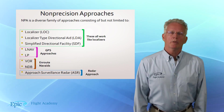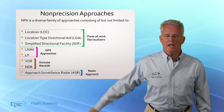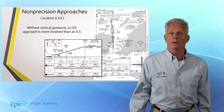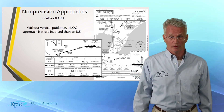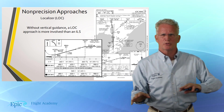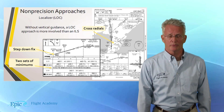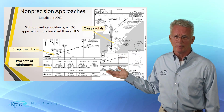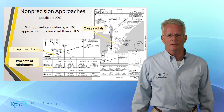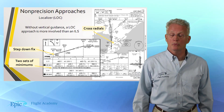Today we'll look at the localizer and the LDA. Looking at the graphic from the online course, we're examining the localizer approach to runway 19 at Cape May County Airport. Without vertical guidance, a localizer approach is more involved than an ILS approach because it requires cross-radials. The cross-radials off of that VORTAC are used to identify specific step-down points along the approach to that runway.